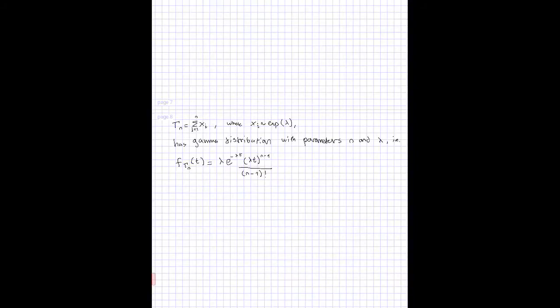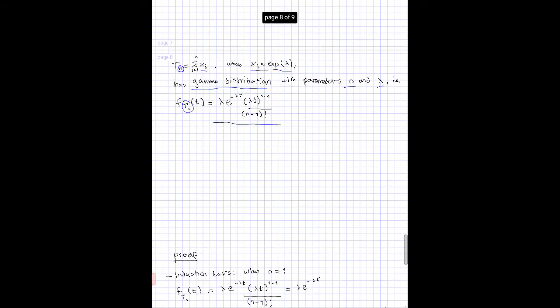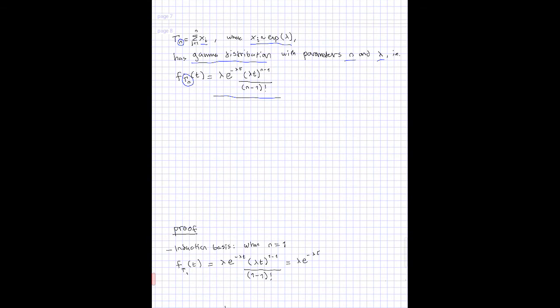In this video we're going to see that the sum of n independent random variables with exponential distribution and parameter lambda follows a gamma distribution with parameters n and lambda. We will show that the probability density function for this sum equals the gamma distribution — that is, the probability that this sum equals the value t. To show this, we will use an induction proof.